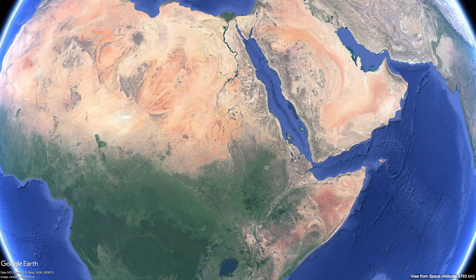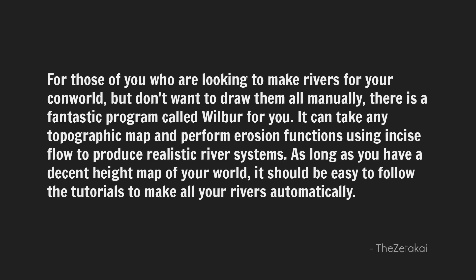In terms of the Nile, where you do have that complicated course in the middle, this is because there are elevation obstructions along the Nile's course. At all times, though, the Nile seeks to take the most direct downhill route. For those looking to make rivers for your conworld but don't want to draw them all manually, there is a fantastic program called Wilbur. It can take any topographic map and perform erosion functions like incise flow to produce realistic river systems. As long as you have a decent height map, it's easy to follow tutorials to make rivers automatically.